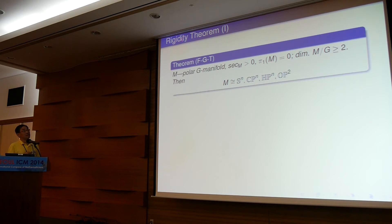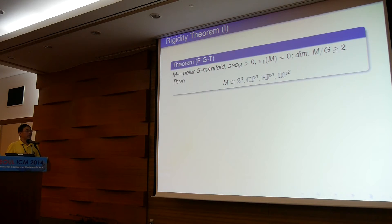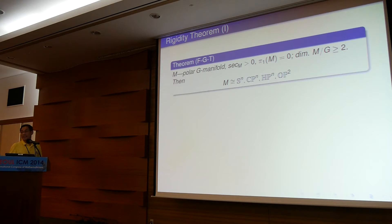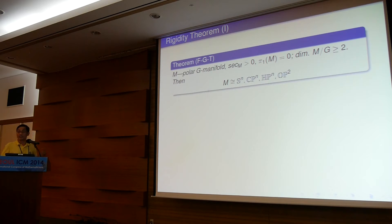The first rigidity result I want to discuss is a non-linear version of the Dadok-Kac theorem. Namely, if we have a Riemannian manifold — a so-called polar manifold — with the polar group acting, and the sectional curvature is positive and the manifold is simply connected, and the cohomogeneity is at least two (meaning the orbit space is at least two-dimensional), then we can show this manifold has to be a standard one: either a sphere or a rank-1 symmetric space, and the action has to be a linear action. We consider this as a non-linear version of the Dadok-Kac theorem, since our condition only assumes positive sectional curvature, while their theorem assumes a round sphere of constant curvature 1.